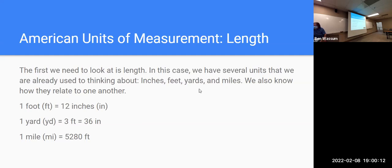We're going to take a look at length first. With American units of measurement, we have inches, feet, yards, miles, etc. One foot is 12 inches, a yard is three feet — which makes it 36 inches — and one mile is 5,280 feet. When you take the HiSET or GED, whether online or in person, they usually give you a little formula sheet, and these types of conversions will be on that sheet.